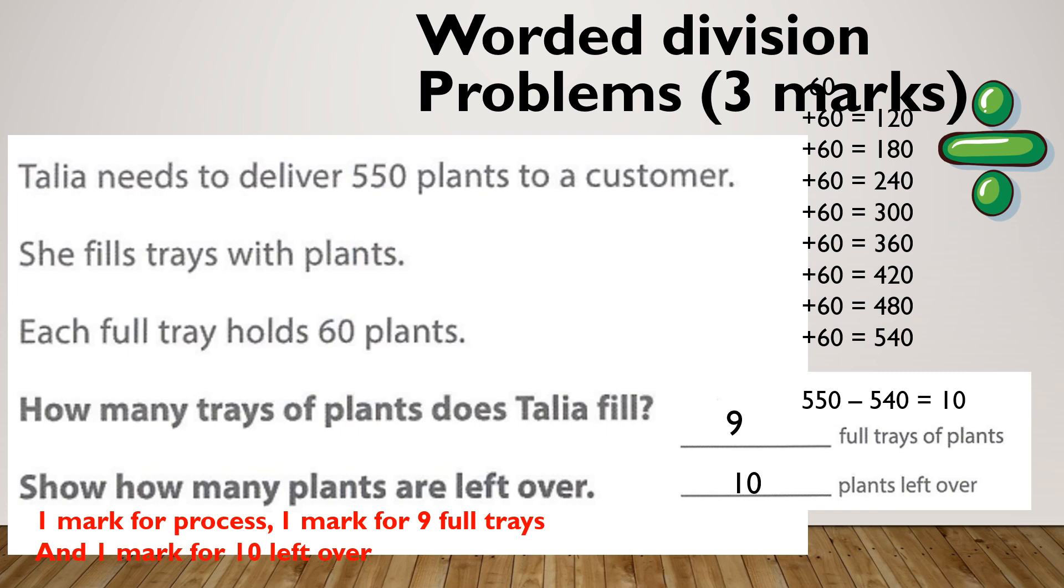One of the ways we could work it out is using repeated addition. I added 60 together until I got nearly to where I wanted to be. Nine lots of 60 got me to 540. Then I worked out the difference and I was there for 10, so I got 9 remainder 10. If you get a question like this and the bus stop division isn't working for you, just keep adding until you get near enough where you want it to be.